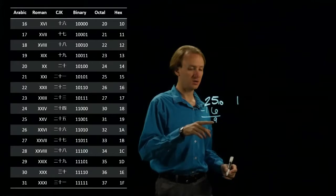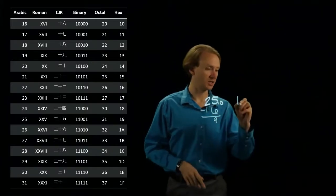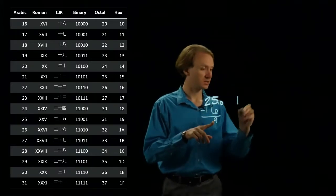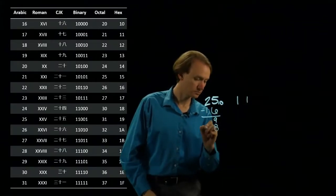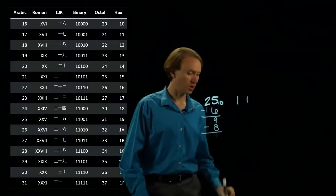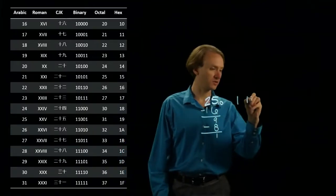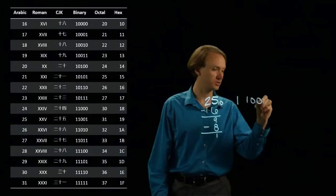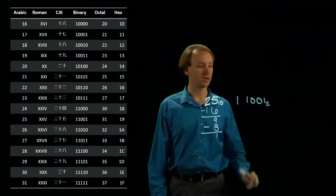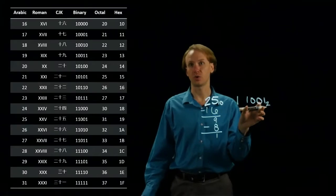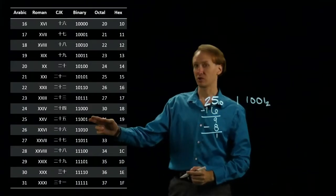The next exponent down from 16 would then be 8, and 8 is less than 9, so I can pull out an 8. This leaves me with 1, which means I'm not going to have any 4s, I'm not going to have any 2s, but I will have a 1. So I get 11001 for 25, which is what we see over here.